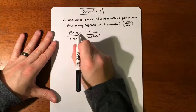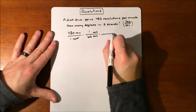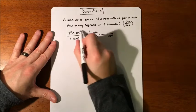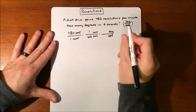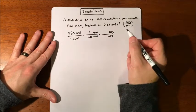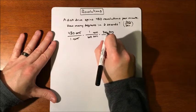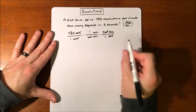Now we need to multiply by something else because we don't need revolutions, we need degrees. So we need revolutions down here so the label will cancel and we can introduce degrees. What kind of equivalent fraction can we create out of that? Well, one revolution is equivalent to 360 degrees.